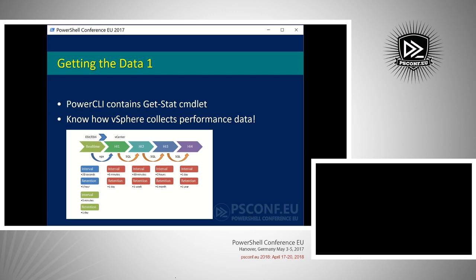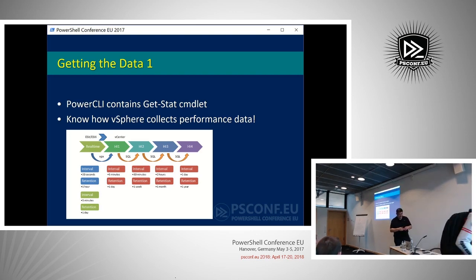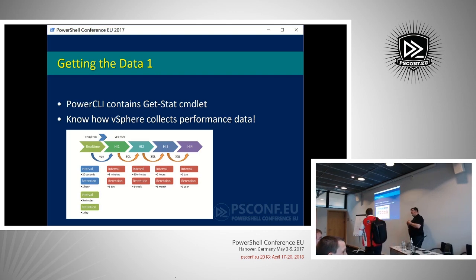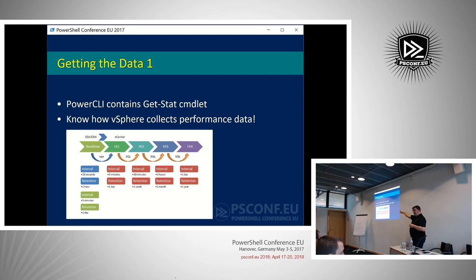Getting the data — like in the previous session on vSphere DSC modules — you have to know your environment. If you want to collect performance data from your vSphere environment, you have to understand how this data is kept there. The ESXi hypervisors collect that performance data in real-time. All the metrics are available there and kept for approximately an hour. If you want the most detailed information, fetch it from your ESXi host, not from vCenter.